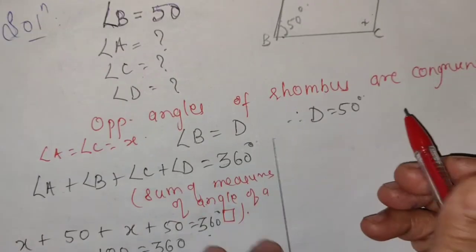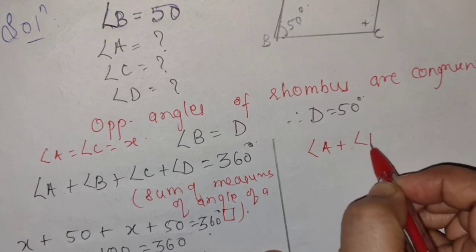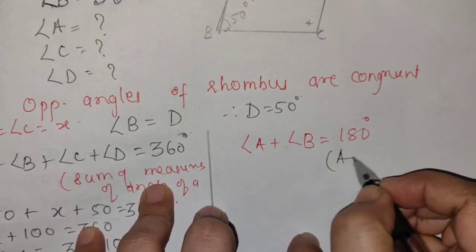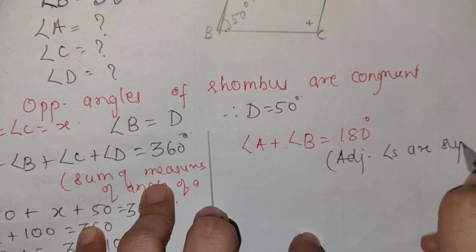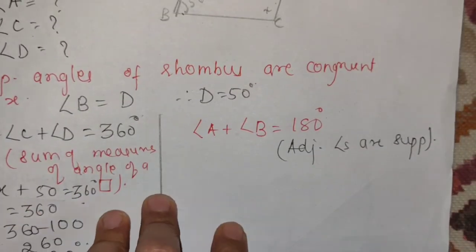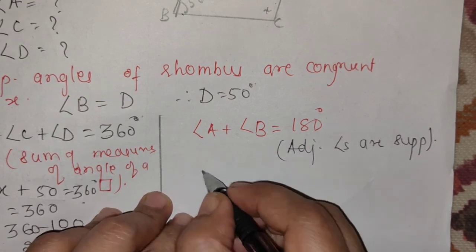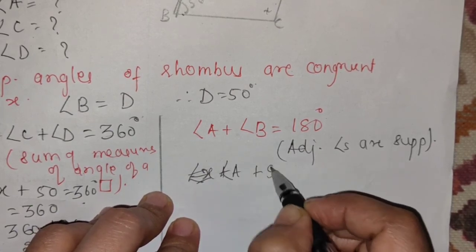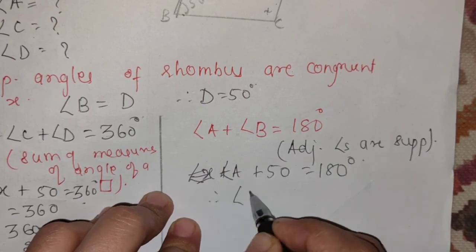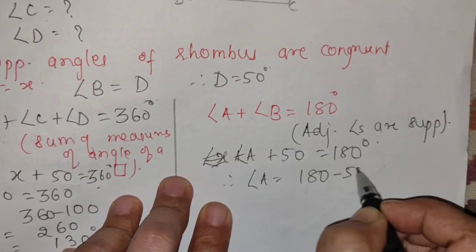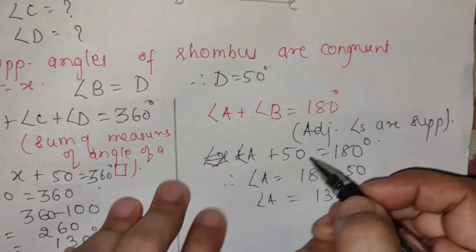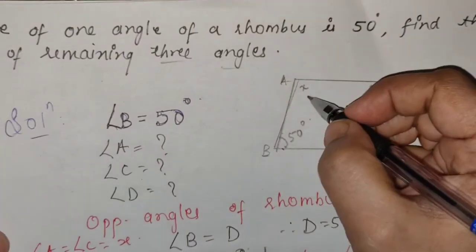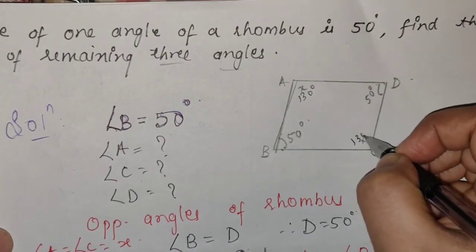Second method: Angle A + angle B = 180 (adjacent angles are supplementary). Substitute: angle A + 50 = 180. Therefore angle A = 180 - 50 = 130 degree. Therefore angle A = angle C = 130 degree. So हमको चारों angles का measurement मिल गया — and the sum is solved.